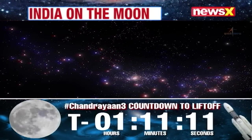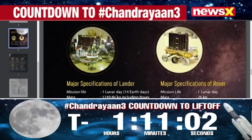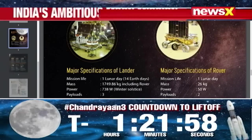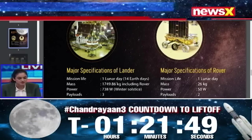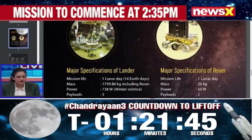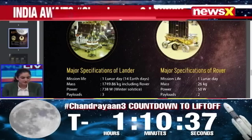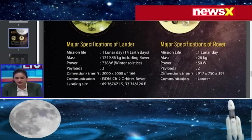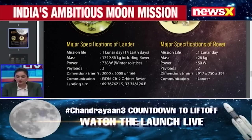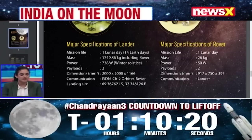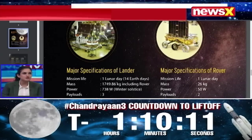We'll take the next few minutes to go through some of these instruments in greater detail with Mr. Ravi Gupta. The lander's mission life is one lunar day — 14 Earth days. The mass of the lander is 1,749.86 kg including the rover, and it has three payloads. As for the rover, its mass is just 26 kg, it carries two payloads, and it communicates directly with the lander. Could you explain how these instruments collect information and how that information is relayed back to Earth?